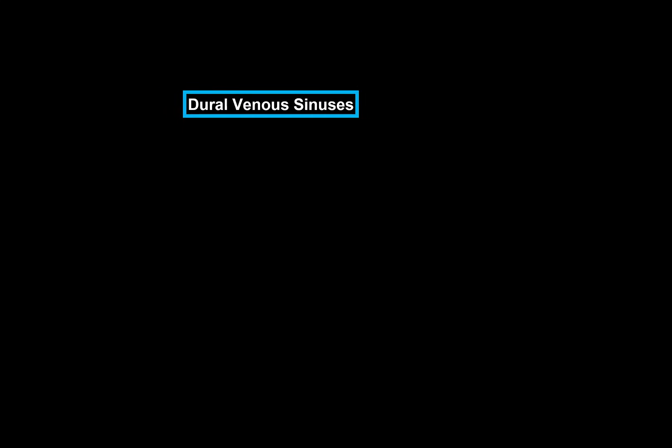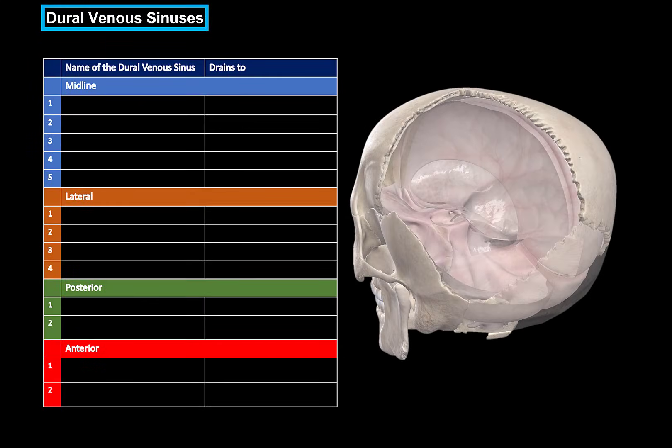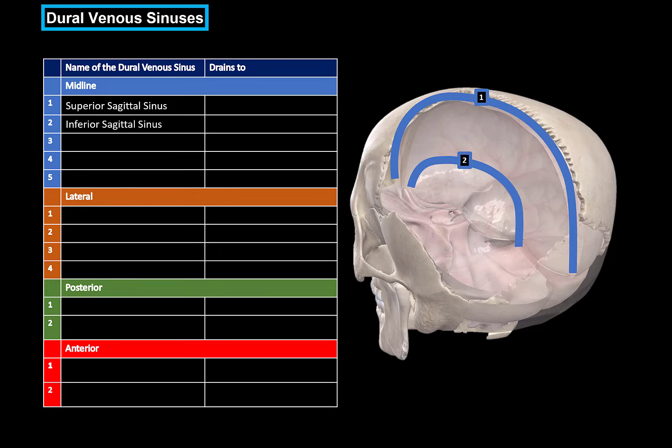Now let's go through the dural venous sinuses one by one using this table. I've divided them into ones located in the midline, ones located laterally, posteriorly, and anteriorly. You can also categorize them as paired and unpaired, but we'll use this categorization. First, we have the superior and inferior sagittal sinuses, then the straight sinus — also called the sinus rectus — which connects these two. Laterally you'll find the transverse sinus, which continues as the sigmoid sinus and then as the internal jugular vein.